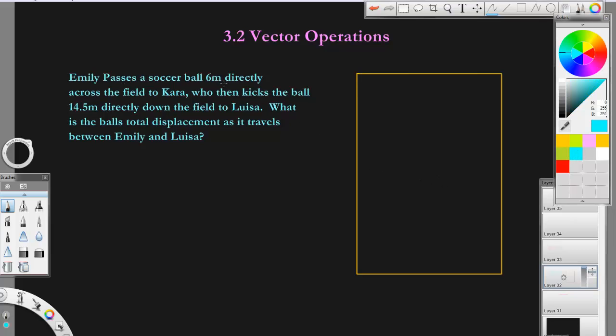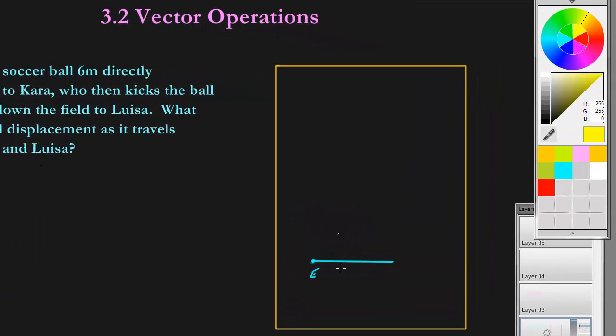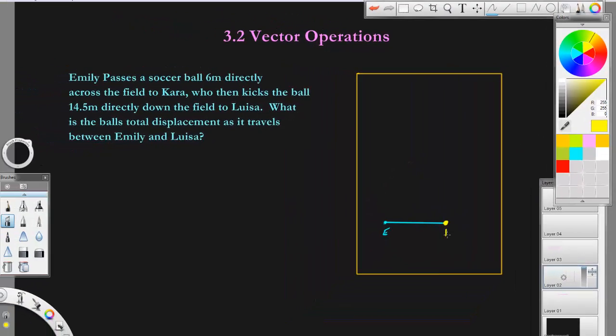So we got Emily passes a ball six meters directly across the field to Kara. So you can imagine Emily being here. This will be Emily and she passes a ball across the field to Kara. So we'll label Kara here. Here's Kara.